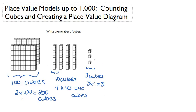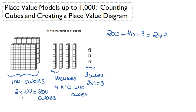Our next step is going to be to add all of these up. So on our very left, we had 200 cubes. In the middle, we had 40 cubes. And then on the very right, we had 3 cubes. When we add all of this up, we get a total of 343.